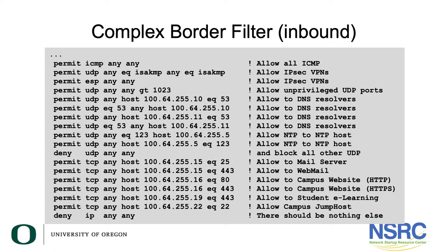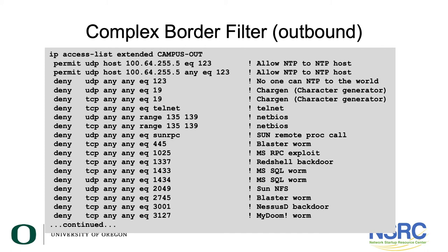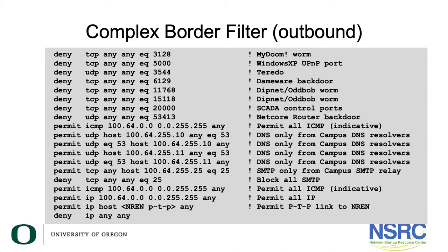This is applied on the external interface facing the upstream provider, your NREN, and it will apply to incoming traffic. There's a similar outbound filter we've called 'campus-out', which has similar elements to what we saw in the inbound filter. We're going to allow our NTP; we're going to disallow various UDP and TCP ports — the equivalents of what we saw in the incoming filter. The second slide shows some of the particular host accesses which are allowed out to the internet.